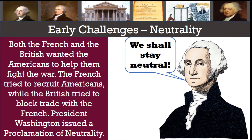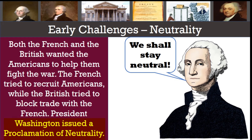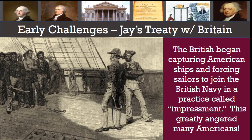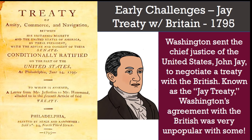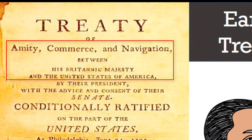Both the French and the British wanted the Americans to help them fight the war. The French tried to recruit Americans, while the British tried to block trade with the French. President Washington issued a proclamation of neutrality, but it didn't hold much weight. The British began capturing American ships and forcing sailors to join the British Navy in a practice called impressment. Washington sent Chief Justice of the Supreme Court John Jay to negotiate a treaty with the British. Known as Jay's Treaty, it called for amity — or friendship — commerce, and navigation; in other words, freedom of the seas.